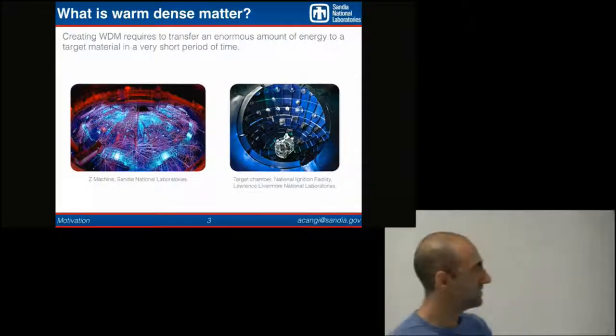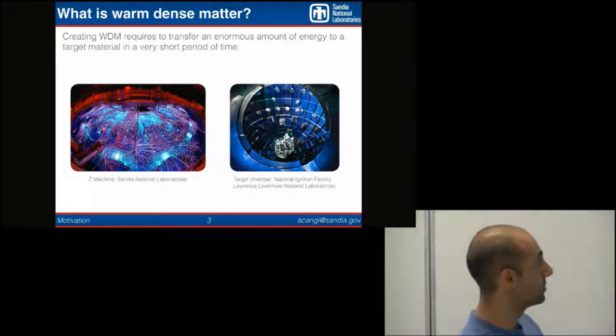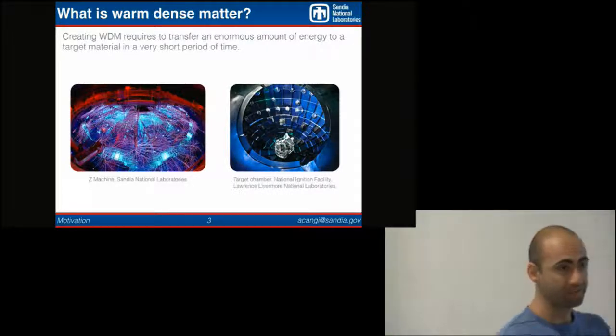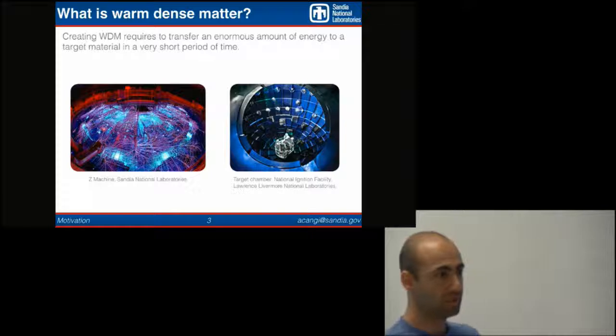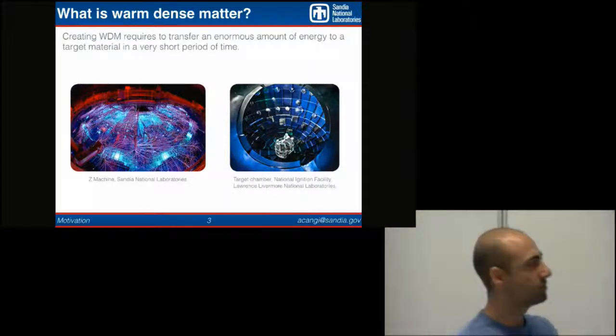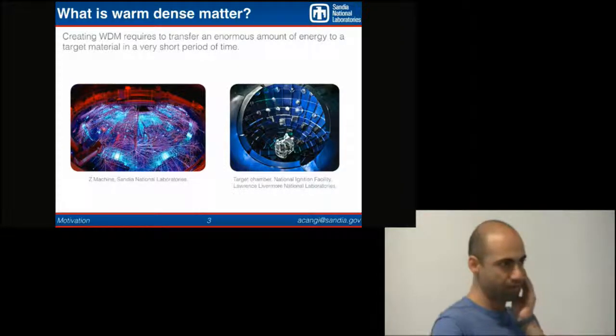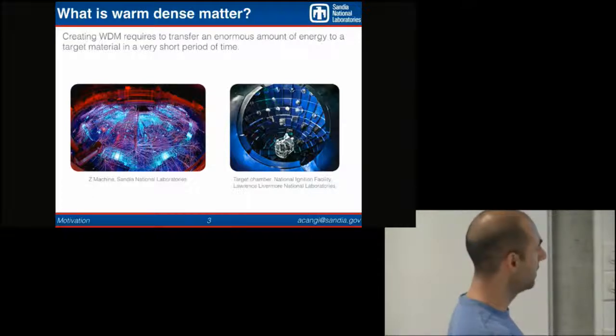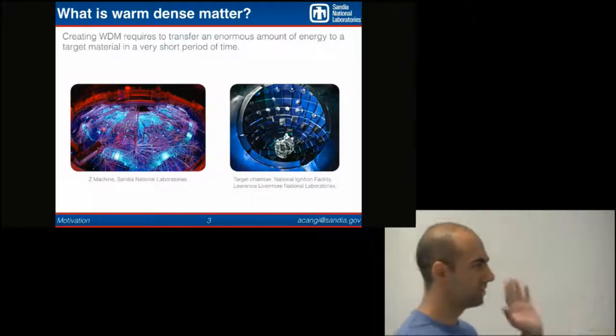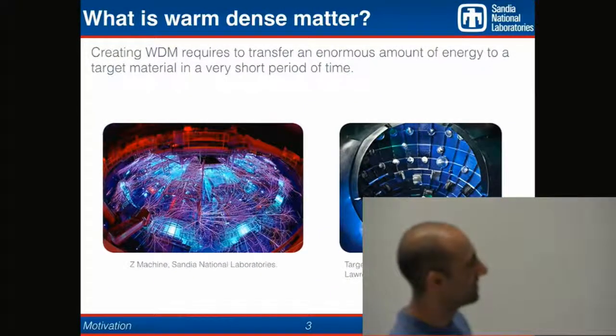Maybe more intuitive units are densities. When we achieve these densities, we are often in warm dense matter, depending on the material. Or temperatures between one and hundred electron volts, corresponding to ten thousand to almost a million degrees Kelvin. So how do we create warm dense matter? We have to transfer an enormous amount of energy to a target material in a very short period of time. This is done at a few experimental facilities in different countries.